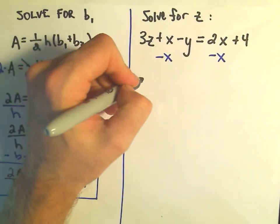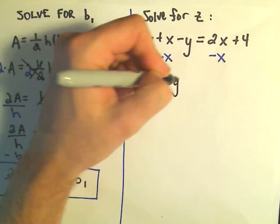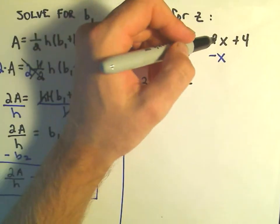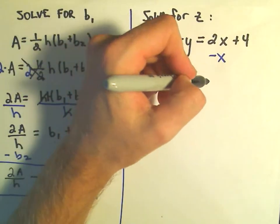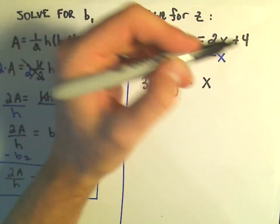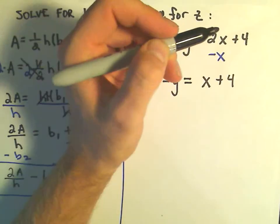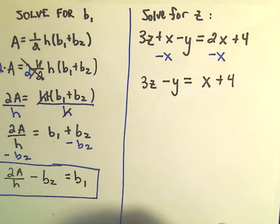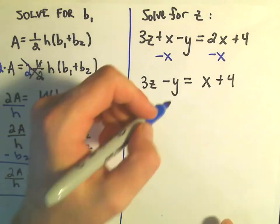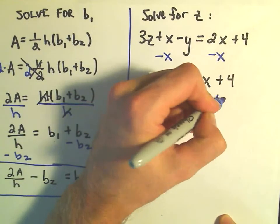On the left side, we would have 3z, the minus y is still there. Well, we would have 2x minus 1x, which would just leave us with a positive 1x, and then plus 4. And again, to get rid of the minus y, we can simply add y to both sides.